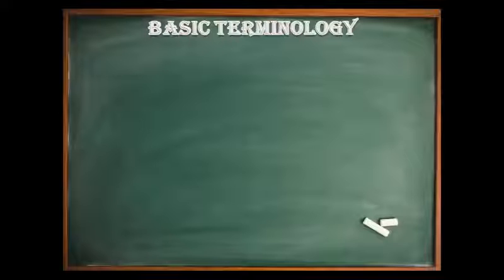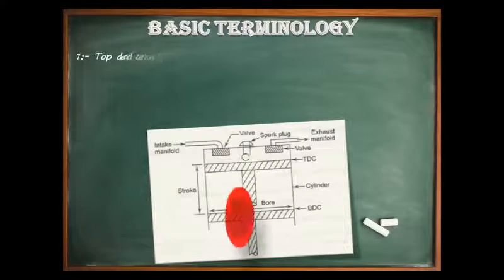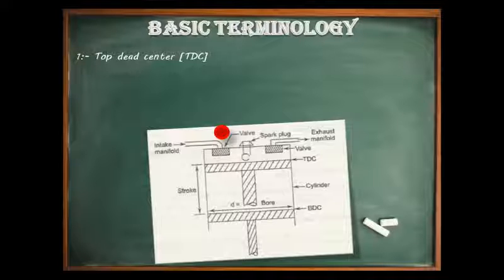The first term which is most commonly used is Top Dead Center, that is TDC. TDC is the extreme position reached by the piston at the top of the cylinder in a vertical engine. TDC can also be defined as the position of the crank of a reciprocating engine or pump when the piston is at the top of its stroke, as we can see in this figure.